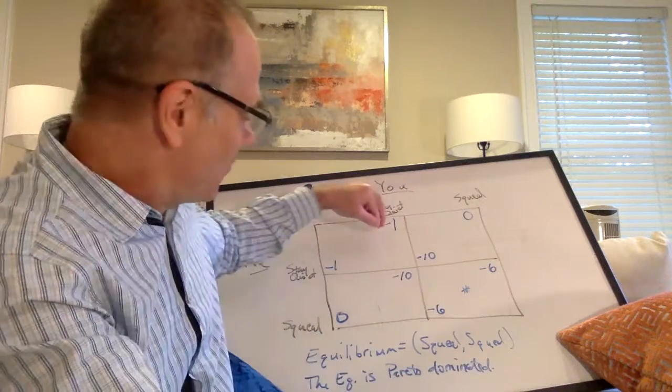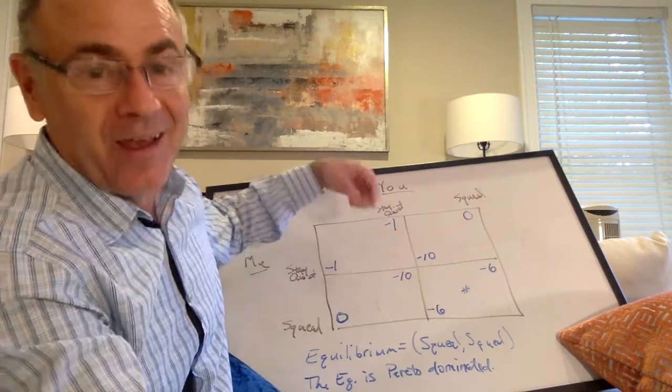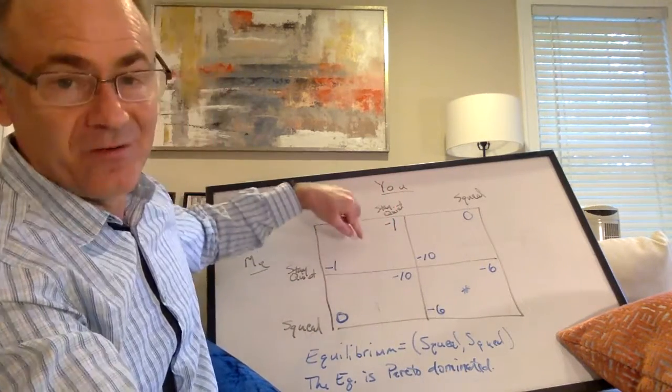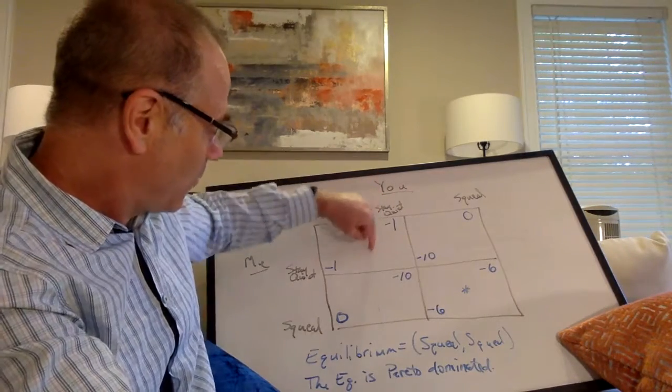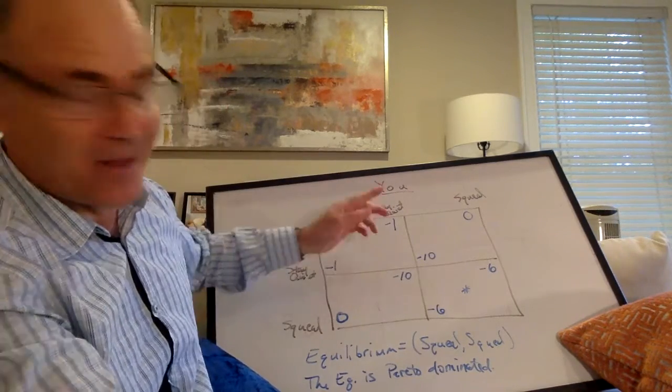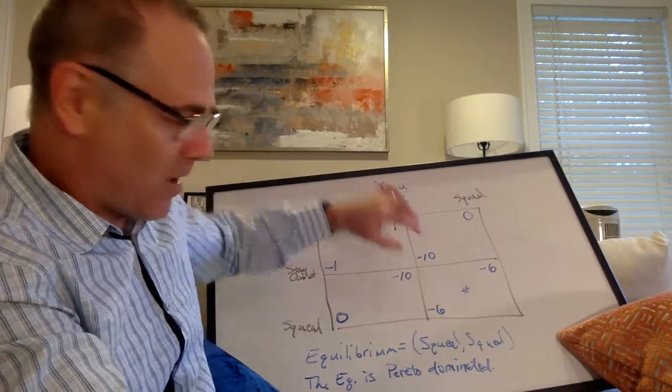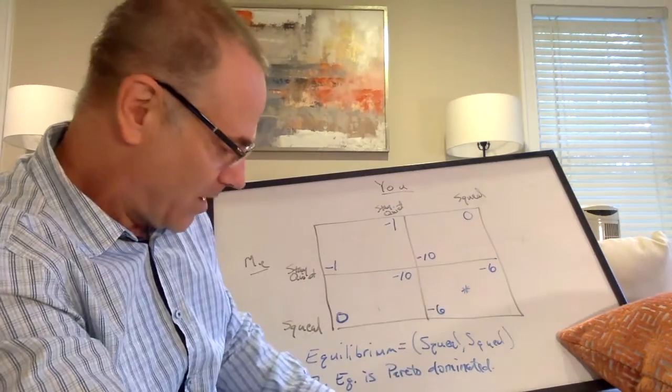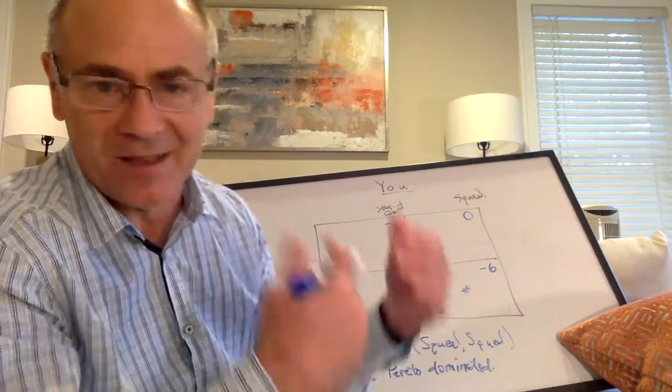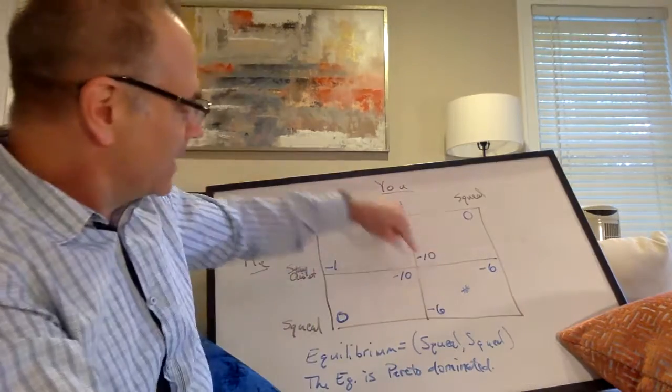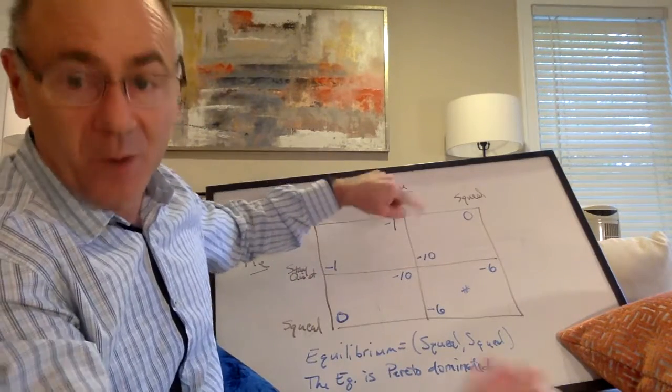The problem is, even if we made that deal, how do you enforce it? Both of us want to defect. If I know you're staying quiet, I can get zero years in jail. But if somehow we could do something like sign a contract, have some outside body enforce this, we could reach an outcome that would make both of us better off.